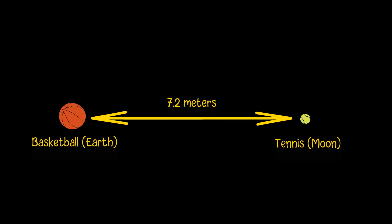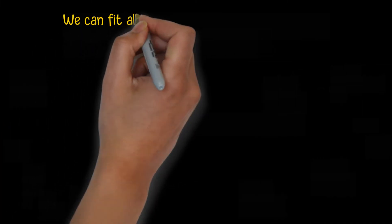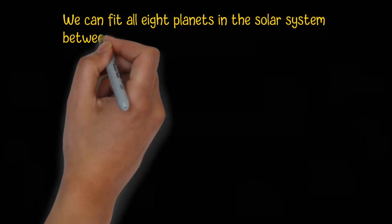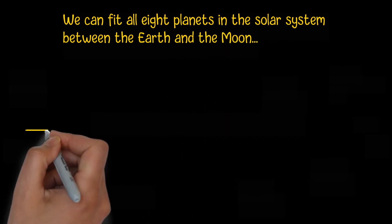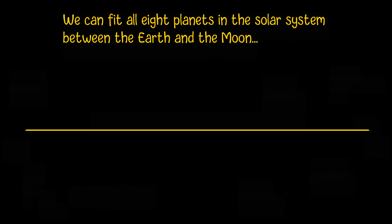Let's consider another interesting example about the distance between Earth and the Moon. At 384,400 kilometers away from each other, we can fit all eight planets in the solar system into this gap, including the two giant gas planets Jupiter and Saturn. Let's do a simple calculation.